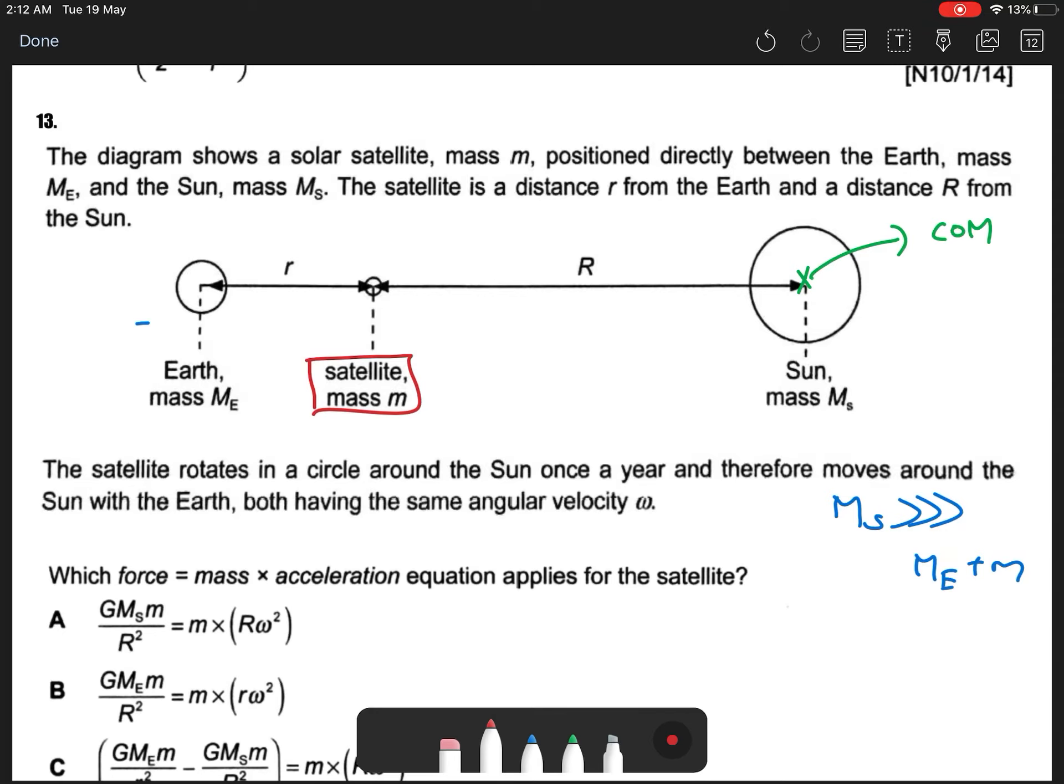Due to your Earth is what? So due to your Earth is in this direction. So your gravitational force is GMₑ, small m, divided by my r, small r².